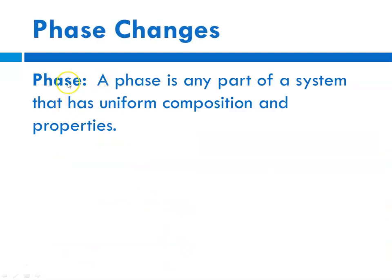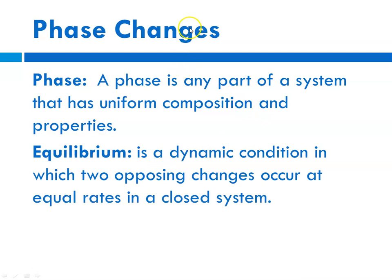When we talk about phase changes, it's important to understand what we mean by phase — we learned this at the beginning of the year in Chapter 2. A phase is any part of the system that has uniform composition and properties. For instance, if you had a peanut butter sandwich with no jelly, there would be a peanut butter phase and a bread phase, and each phase should be uniform. Sometimes when you have phase changes taking place, an equilibrium is established if you have a closed system — that is a dynamic condition where two opposing changes are occurring at equal rates, and I'll show you what I mean by that in a few slides.